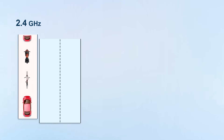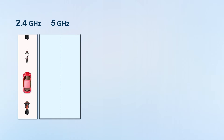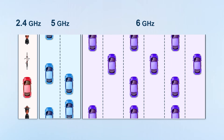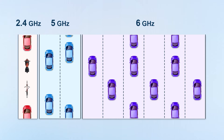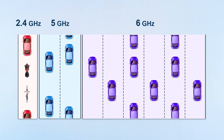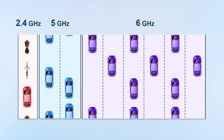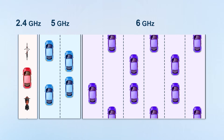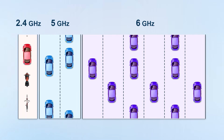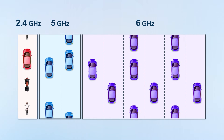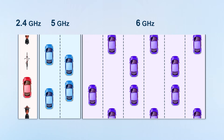If you haven't understood it yet, we can think of these three frequency bands as roads — just as the number of available lanes and the width of those lanes affect driving speed and travel time. 2.4 GHz is similar to an ordinary city lane, with slow driving speed, few and narrow lanes, and motorcycles, cars, and bicycles can all drive on it.